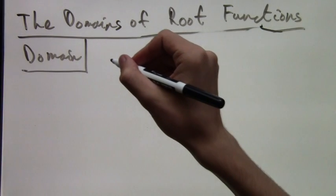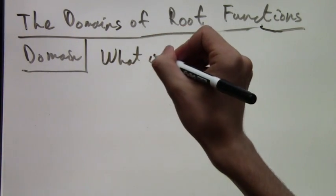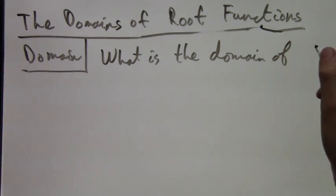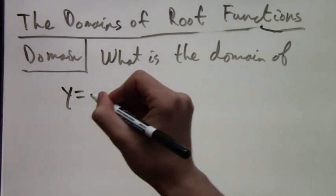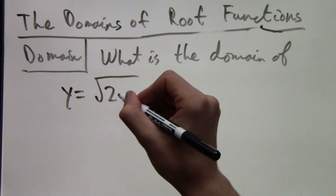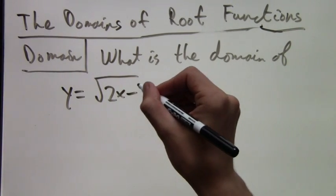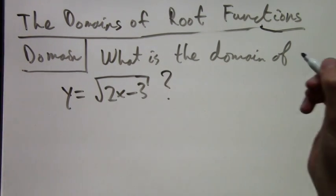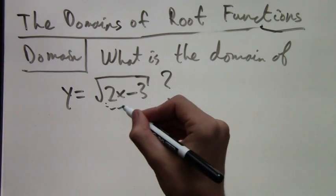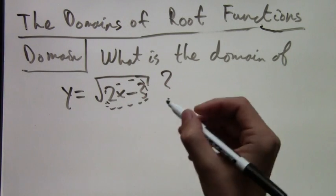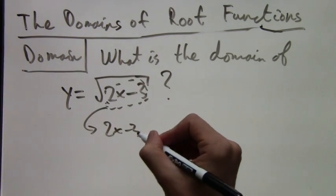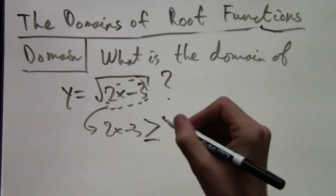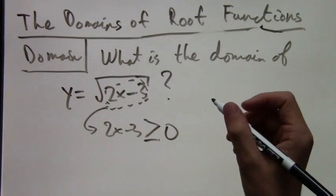The next example: What is the domain of the function y equals root 2x minus 3? We have our square root, and inside we have 2x minus 3. We know that what's inside the square root has to be greater than or equal to 0, and that defines the domain.